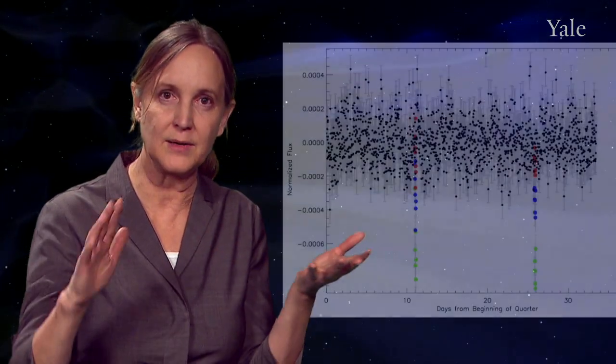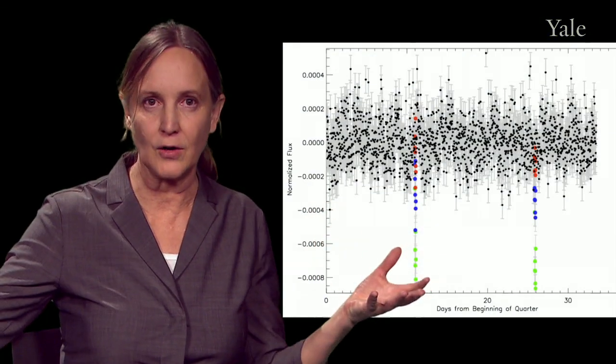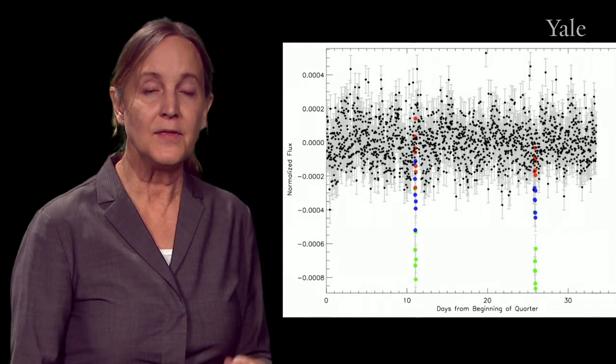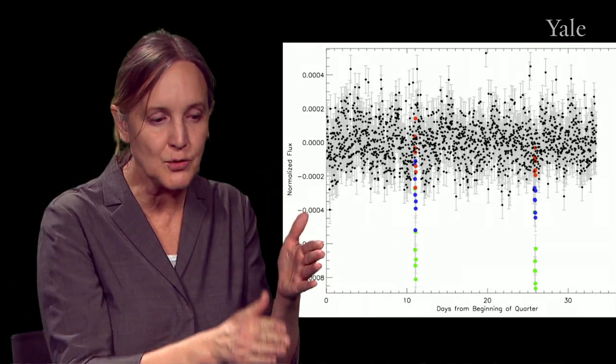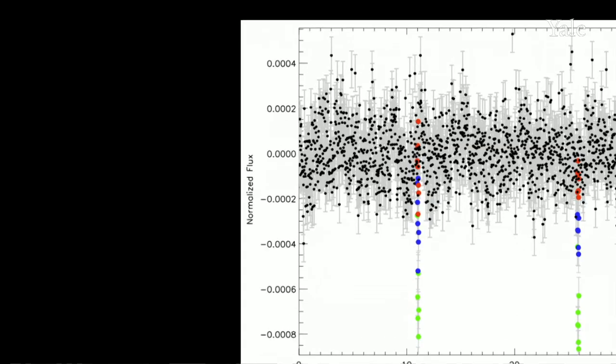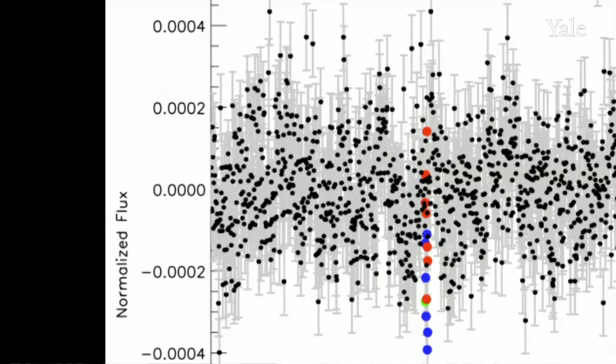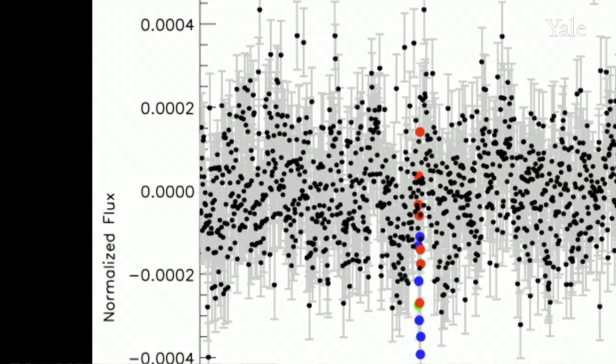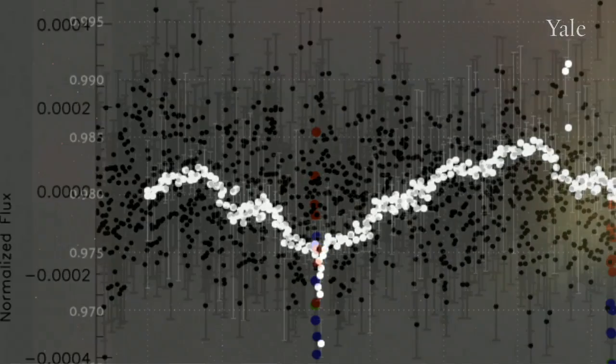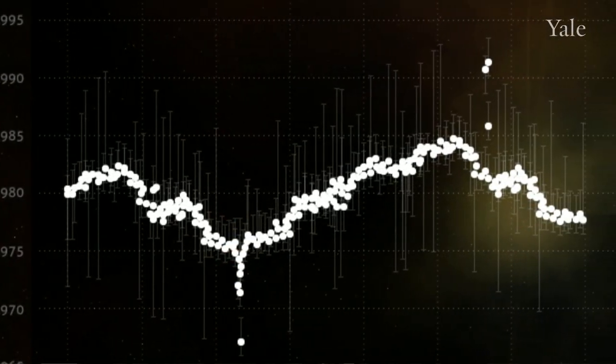The human brain is incredible at pattern recognition. We think that against the background of these very wildly varying light curves with spots and everything else, you'll be able to pick out tiny transit events. With Planet Hunters, citizen scientists will be able to evaluate one of these light curves in a matter of seconds. We'll ask you to do three things.